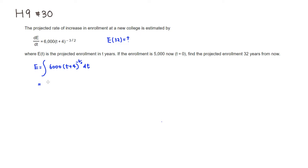6,000 is just a number, so I'll just put that in front. If you take the antiderivative, we can just use the power rule — add 1 to the power, so it's going to be negative 1 half, and divided by negative 1 half is the same thing as multiply. Negative 1 half.